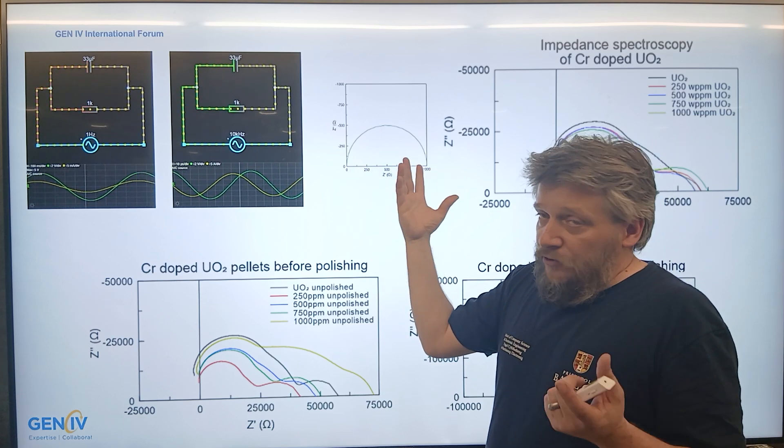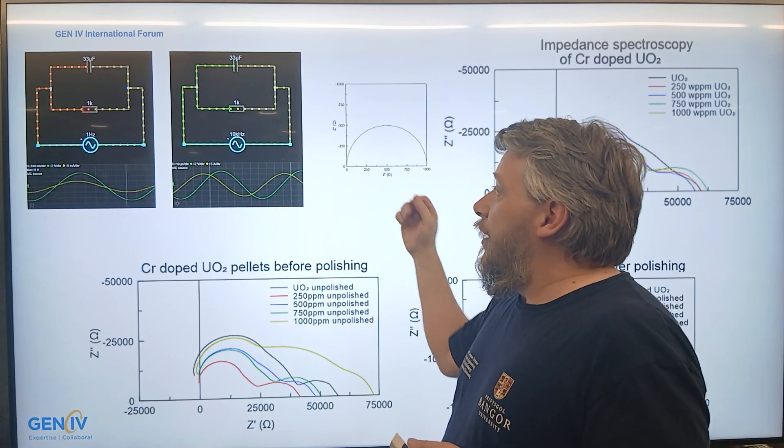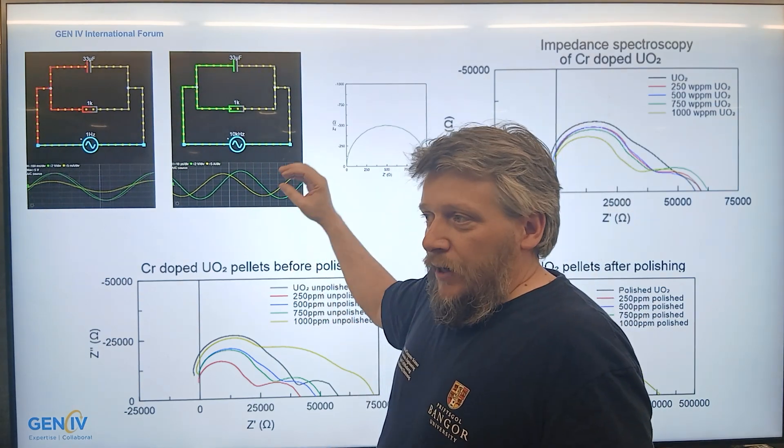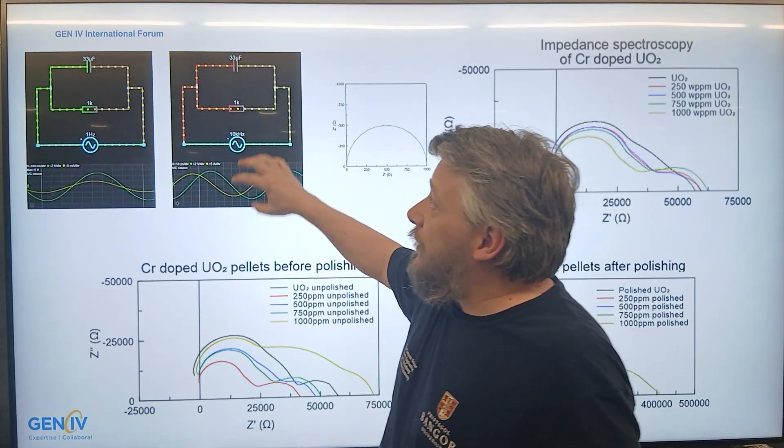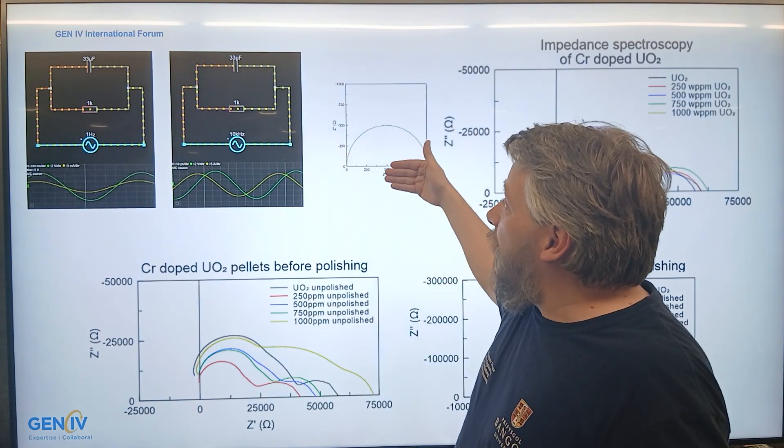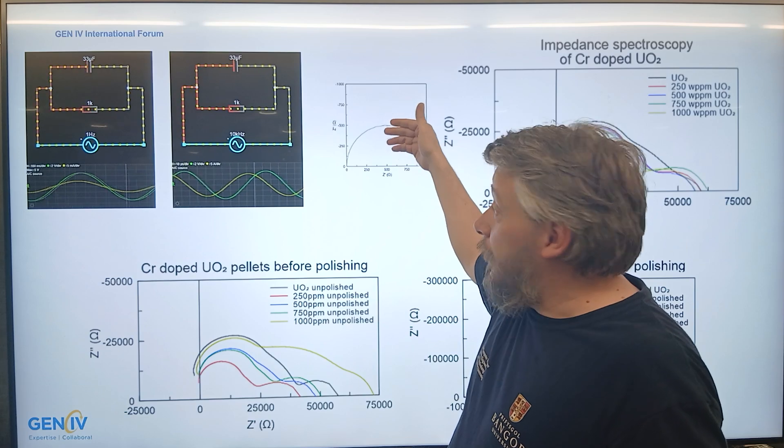So the real aspect of that, the traditional way that you look at resistance. When you start increasing the frequency you start to match how quick the frequency is compared to the time that the material can charge in its capacitive aspect. And that's where we get the peak in the imaginary on the Nyquist plot.